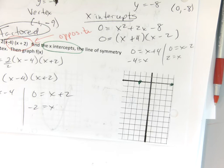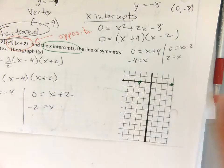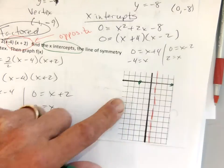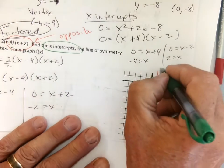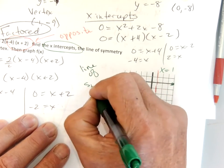The line of symmetry has to be in the middle of the x-intercepts. So the line of symmetry is at x equals positive 1. There's my line of symmetry.